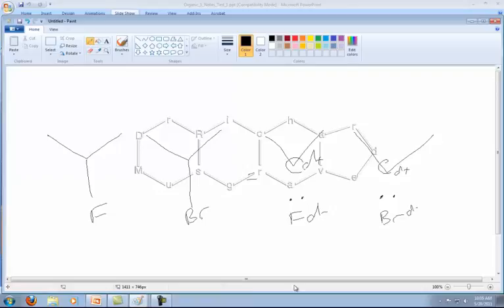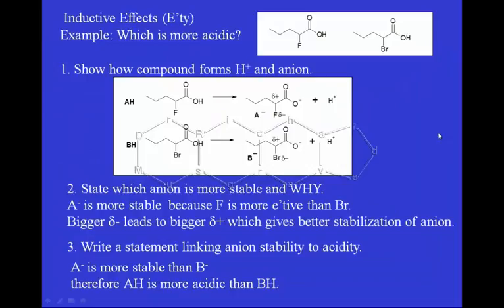We're seeing a bigger delta plus in the fluorine case and a smaller delta plus in the bromine case. We take the H+ off the O and leave an O negative. A minus is more stable because F is more electronegative than Br — a bigger delta minus leads to a bigger delta plus, which gives better stabilization of the anion. Therefore AH is more acidic than BH, because we're going to form more A minus than B minus, giving more H+ in each instance.